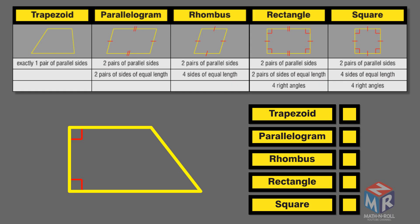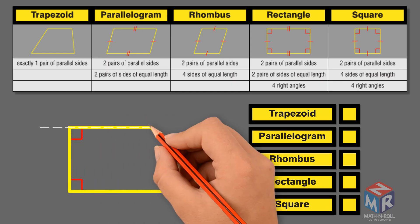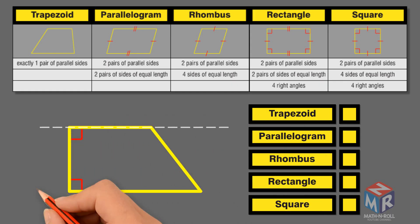Let's take a look at another quadrilateral. It is a trapezoid because it has one pair of parallel sides. It is not a parallelogram, rhombus, rectangle, or square because it does not satisfy the requirement of two pairs of parallel sides.